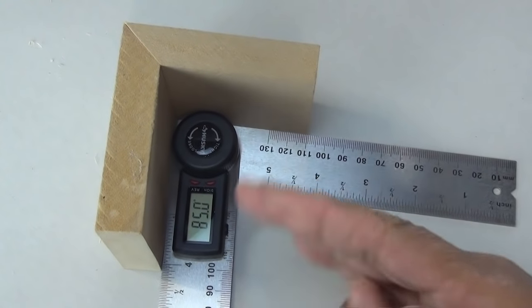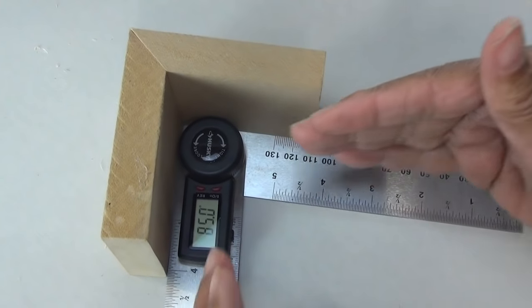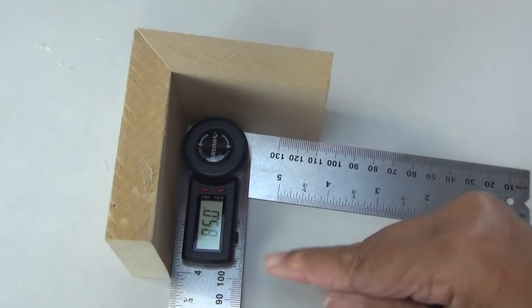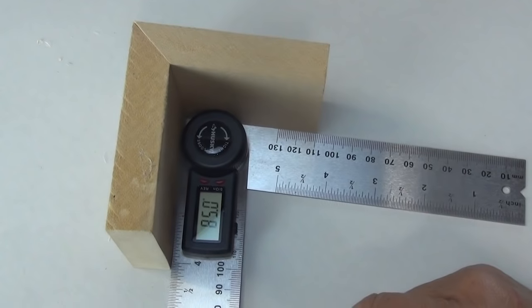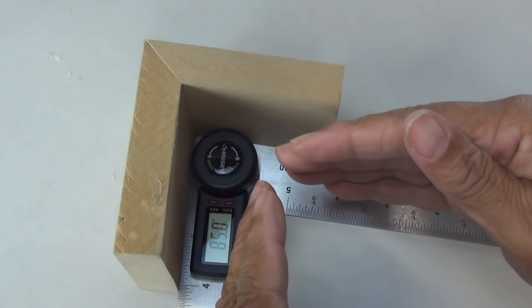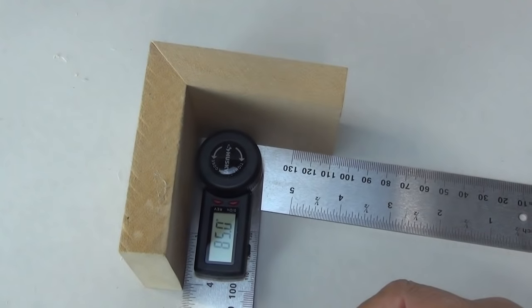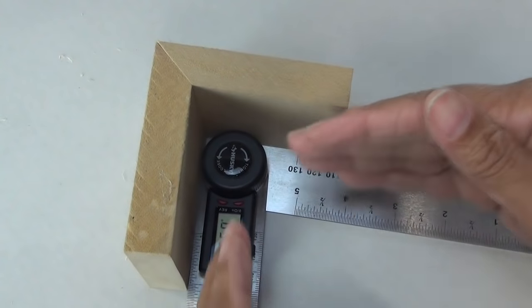And what that means is we cut it in half because we need two pieces of wood to come together. And if we cut that in half, that's 42 and a half. So we need to cut two pieces at a 42 and a half angle to make an 85.